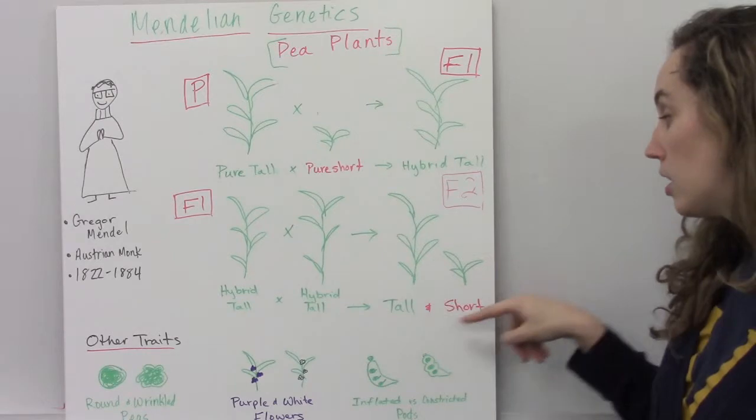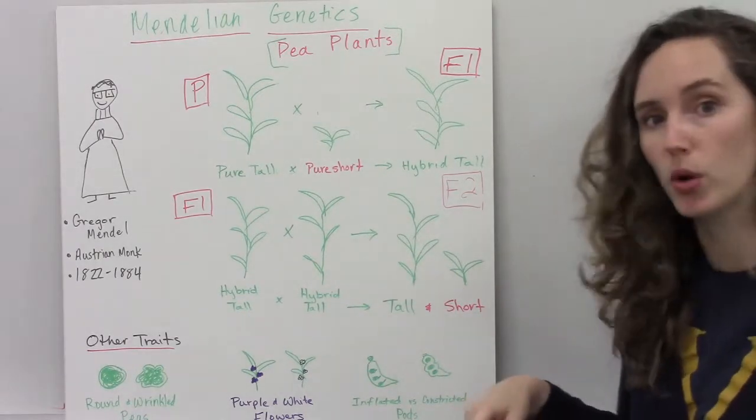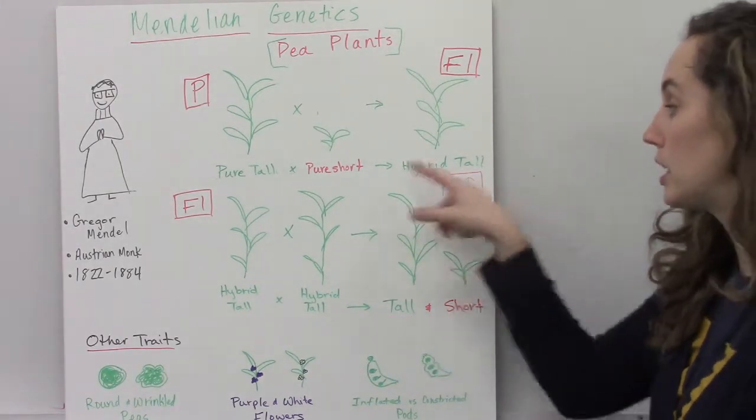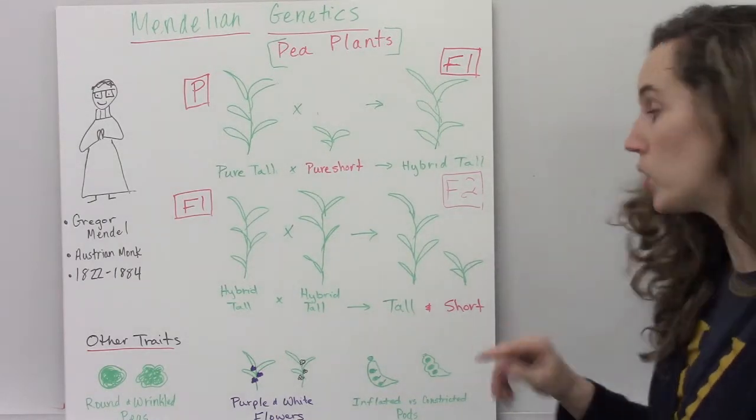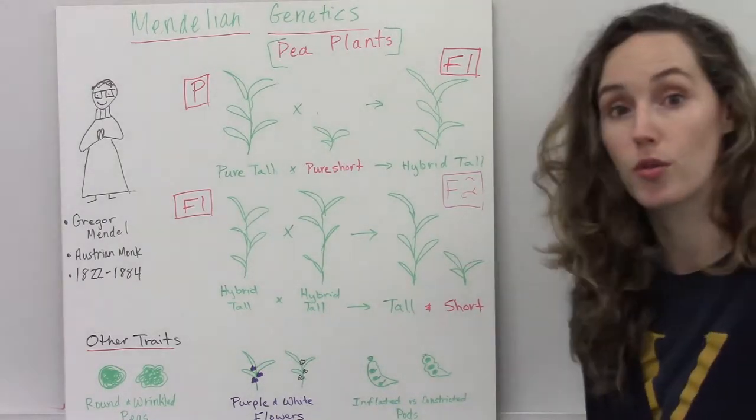Seventy-five percent of the plants were tall, but there was that 25% minority that showed the short phenotype.